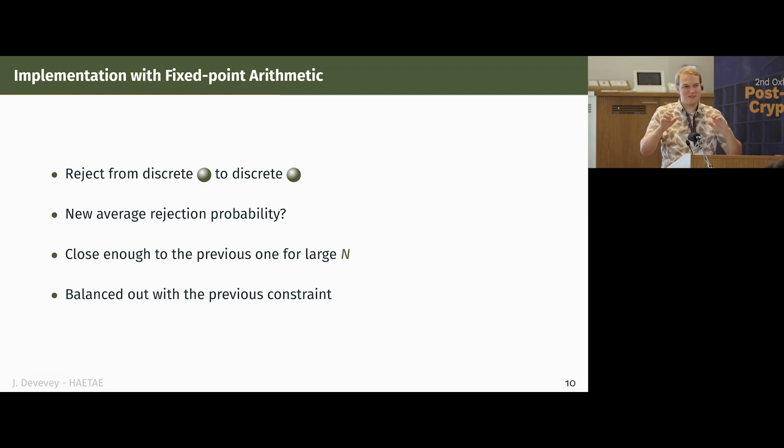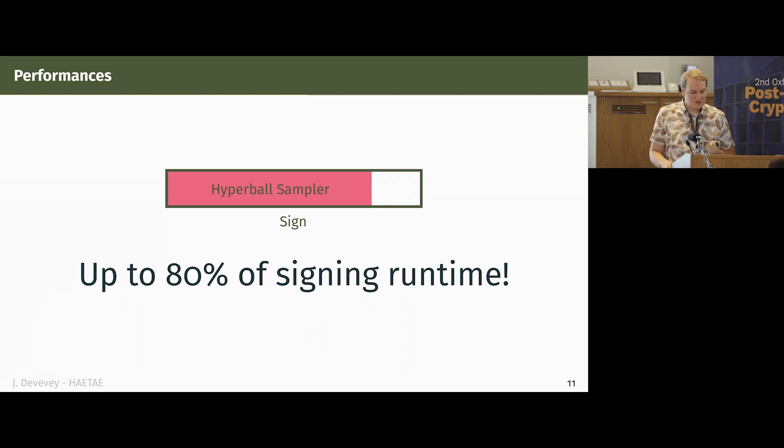This actually changes a little bit the analysis that comes later on because you are now rejecting from discrete hyperball to discrete hyperball. So the global rejection probability changes a little bit in the sense that your number of iterations may grow a little bit or maybe a lot. We don't really know, except if you know how to count how many points there are in a hyperball. But we know that if the discretization step is small enough, then this will be actually close enough to the continuous analysis. And fortunately for us, there is a way to balance out these two discretization constraints.